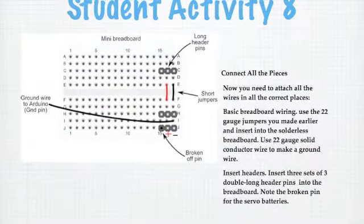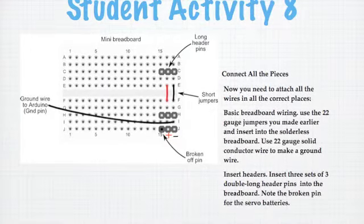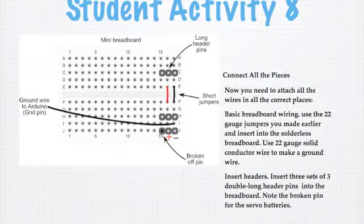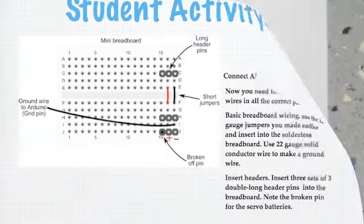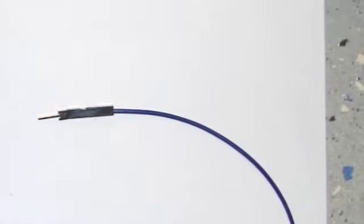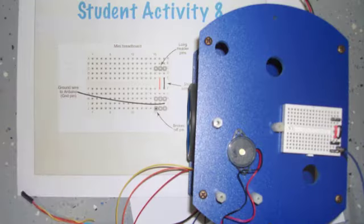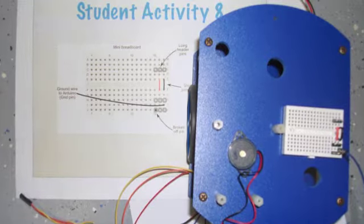In student activity eight, they'll begin mounting some of the jumpers and some of the pins onto the breadboard. Some of the jumpers will have been made earlier, so they're pre-prepared, so the students just have to plug them in. And it'll look like that after they get done with it.